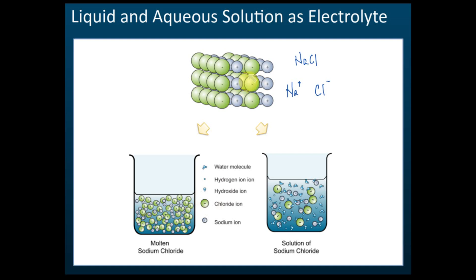In solid state, these ions are bonded together at fixed positions and are not free to move. They carry charge, but they are not free to move. If there is no charge movement, they cannot conduct electricity, because electricity is a flow of charge. If the charge cannot move, there is no electricity, and therefore they cannot conduct electricity in solid state.